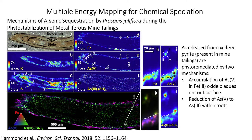As a final example, multi-energy mapping can be used to look at environmental contamination. In this example, the authors examined the mechanism of arsenic sequestration by a plant during phytostabilization of arsenic-bearing mine tailings. Arsenic was released from oxidized pyrite in the mine tailings and was phytoremediated by two mechanisms: accumulation of arsenic(V) and iron(III) oxide plaques on the root surface, and reduction of arsenic(V) to arsenic(III) within the root interior. In image G, the distribution of arsenic(V) in blue is co-located with iron along the root epidermis, while bright green spots in the interior represent an organic-bound arsenic(III) species.